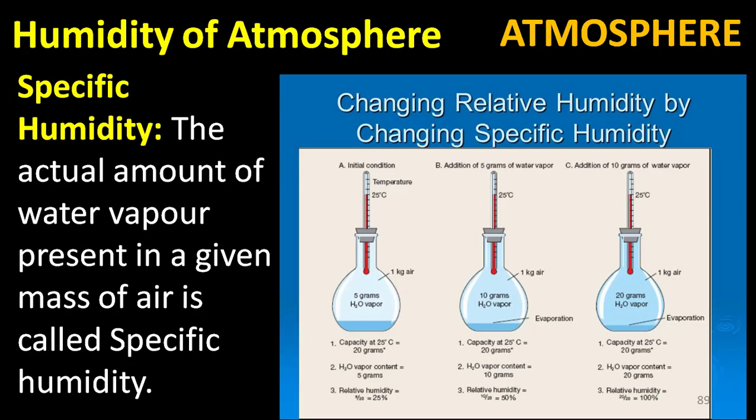Specific humidity: the actual amount of water vapor present in a given mass of air is called specific humidity. These are the concepts of humidity and the types of humidity.